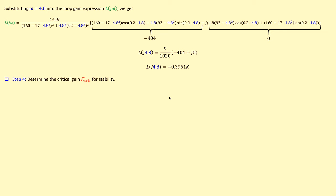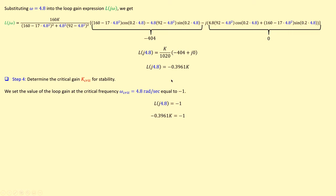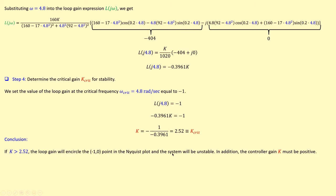Step four is to determine the critical value K_critical for stability. The loop transfer function must equal minus one when the critical frequency is substituted. So we set −0.3961·K = −1. Solving, we get K_critical = 2.52. If the controller gain is made larger than this value, the loop gain will encircle the point (−1, 0), making the system unstable.